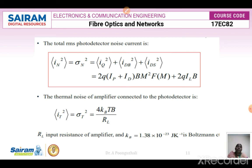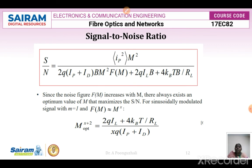The total RMS photodetector noise current squared is i_n² = i_Q² + i_dB² + i_dA² = 2q·(I_P + I_dB)·M²·F(M) + 2q·I_l·B. The thermal noise of the amplifier connected to the photodetector is i_T² = σ_T² = 4·k_B·T·B/R_L, where R_L is the input resistance of the amplifier, k_B is Boltzmann's constant in joules per kelvin, and T is the temperature. The signal-to-noise ratio equals I_P²·M² divided by [2q·(I_P + I_d)·B·M²·F(M) + 2q·I_l·B + 4·k_B·T·B/R_L].